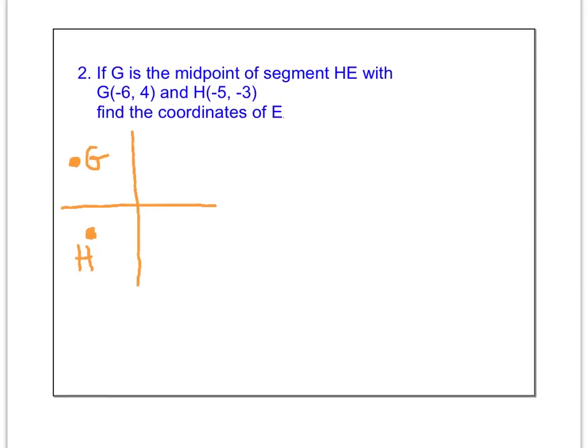What you see I've done here is a real quick sketch of where G is, to the left 6 and up 4, and where H is, to the left 5 and down 3. Now this isn't exact, it's just an approximation, and you don't need to draw this picture. I'm just trying to show it, maybe it's a little bit helpful for some of you.